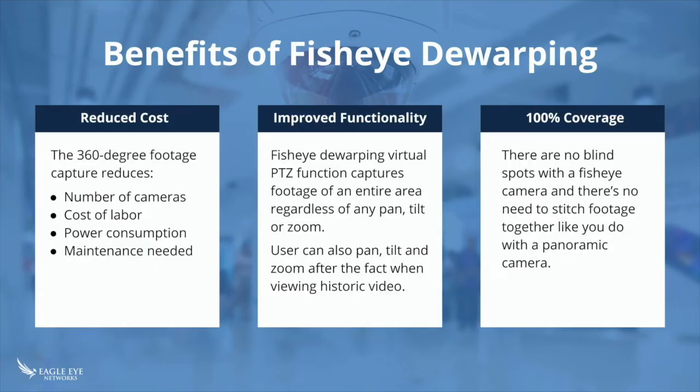What are the benefits of fisheye dewarping? Number one, you reduce the number of cameras required to cover the same area. That also means you cut the cost of labor, there's less power consumption, and less maintenance because you maintain one camera instead of three or four. It gives you that 360-degree capture of everything. What we're going to show you today is fisheye dewarping and virtual pan-tilt-zoom within that, so you can pan, tilt, and zoom anywhere within the image.